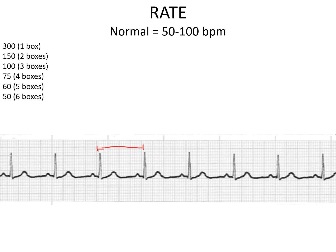If the rhythm is irregular, then there is a formula: 6 multiplied by the number of RR intervals in 10 seconds, because a standard ECG strip is 10 seconds. So when we count the number of RR intervals in one 10-second strip and multiply it by 6, we can get the rate for an irregular rhythm.